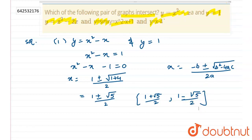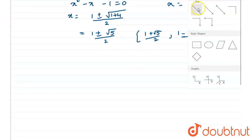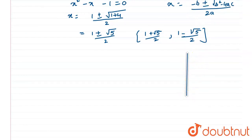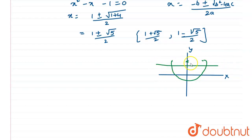Let's draw this on the graph and check whether they intersect. We have the x-axis and y-axis. The two points are (1 + √5)/2 and (1 - √5)/2, so one point is here and one is here, and the parabola looks like this. The line y = 1 is a straight horizontal line, and yes, both graphs are intersecting.